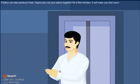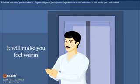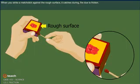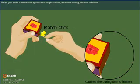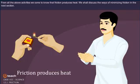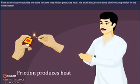Friction can also produce heat. Vigorously rub your palms together for a few minutes. It will make you feel warm. When you strike a matchstick against the rough surface, it catches fire due to friction. From all the above activities, we come to know that friction produces heat. We shall discuss the ways of minimizing friction in the next section.